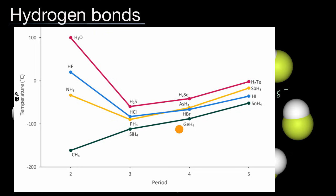But within any given period, you do see separation in boiling points — and in particular, a lot of separation for the molecules formed with oxygen, fluorine, and nitrogen. These molecules, despite having similar molar masses, have very different boiling points. So there must be some other type of intermolecular force at play above and beyond London dispersion forces — and the answer is yes: what you have at play are hydrogen bonds.